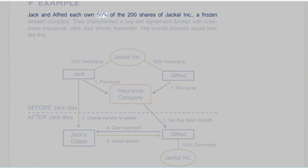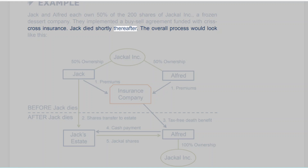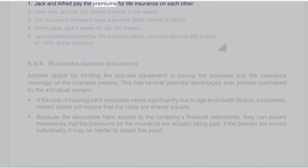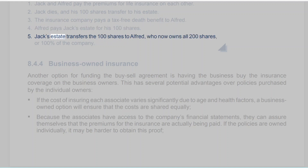Example: Jack and Alfred each own 50% of the 200 shares of Jackal Inc., a frozen dessert company. They implemented a buy-sell agreement funded with Criss-Cross Insurance. Jack died shortly thereafter. The overall process: 1. Jack and Alfred pay the premiums for life insurance on each other. 2. Jack dies and his 100 shares transfer to his estate. 3. The insurance company pays a tax-free death benefit to Alfred. 4. Alfred pays Jack's estate for his 100 shares. 5. Jack's estate transfers the 100 shares to Alfred, who now owns all 200 shares, or 100% of the company.